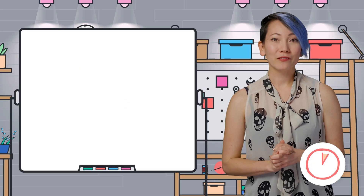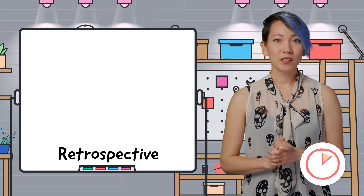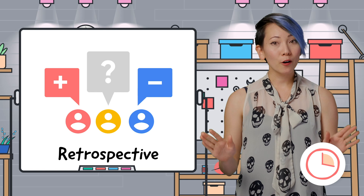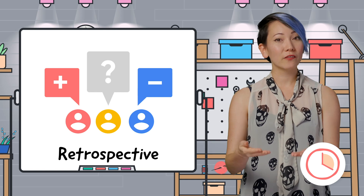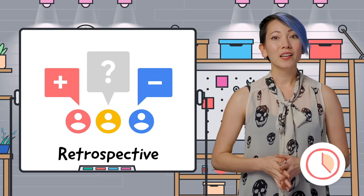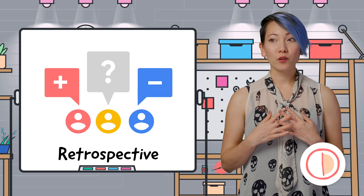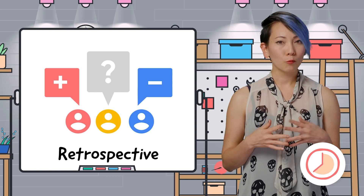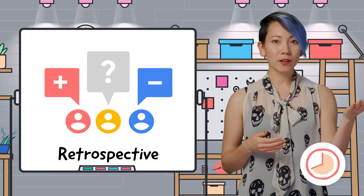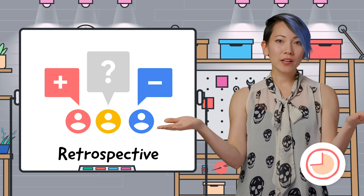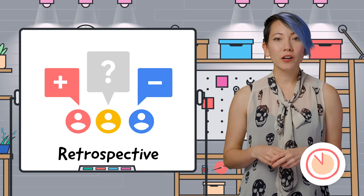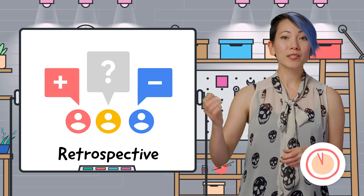This is important stuff. Step 5: Retros. Different than demos because the focus is on how you worked instead of what you made. It's a time for reflection with the goal of Kaizen, or continuous improvement. What went well this sprint? How can we plan the next one better? How were our lines of communication within our team and with other stakeholders?